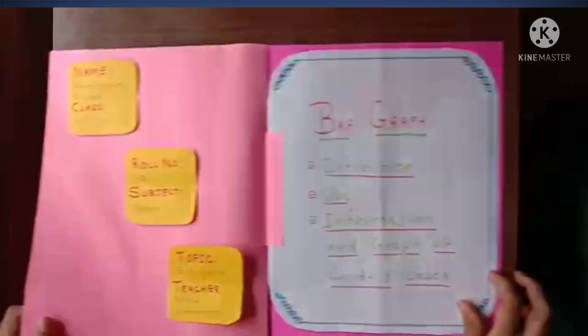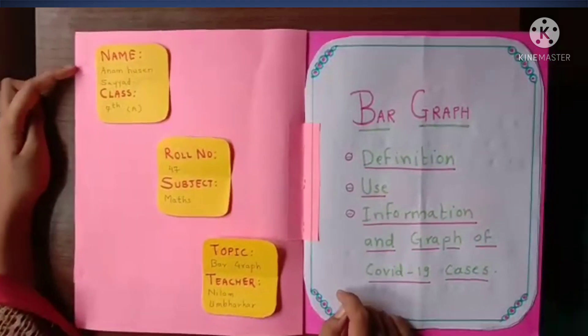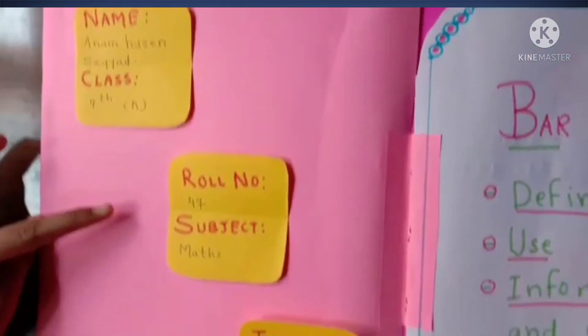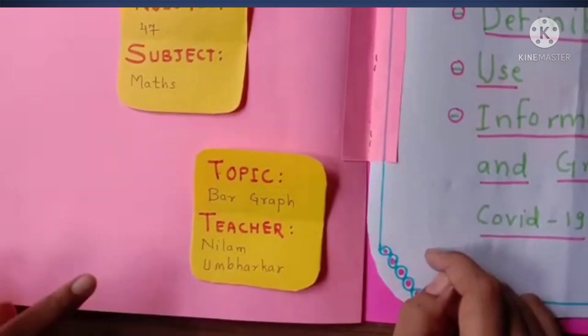The next is the introduction page, which includes: name, class, roll number, subject, topic, and teacher.